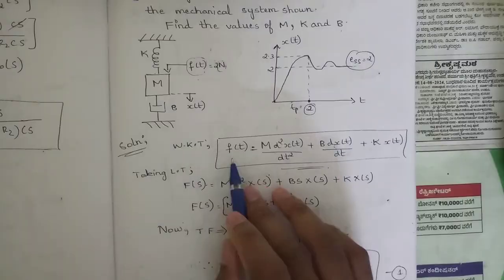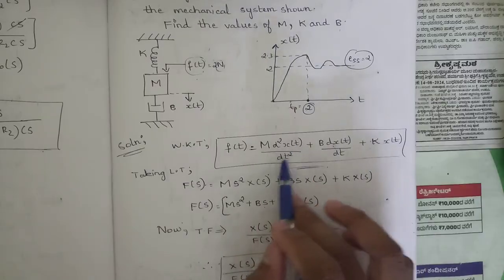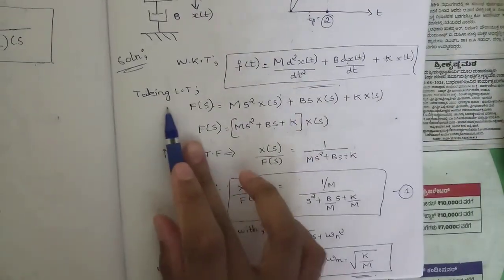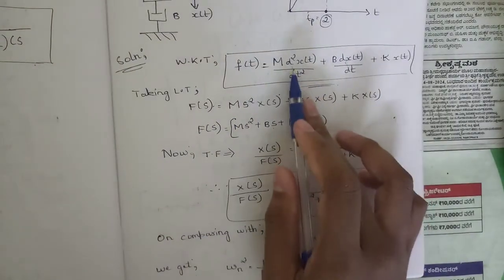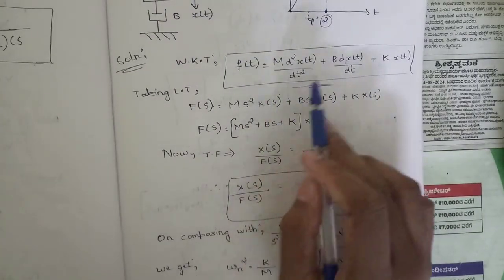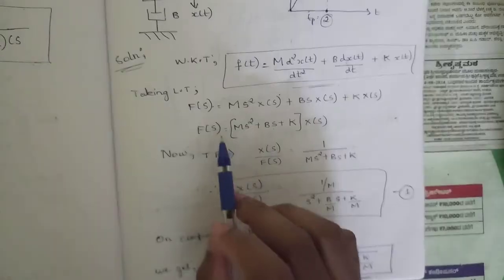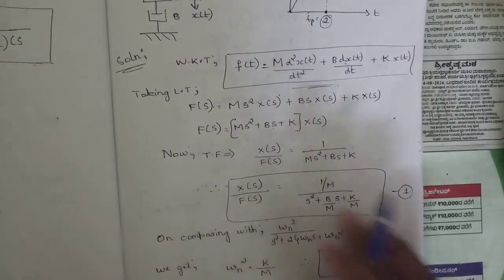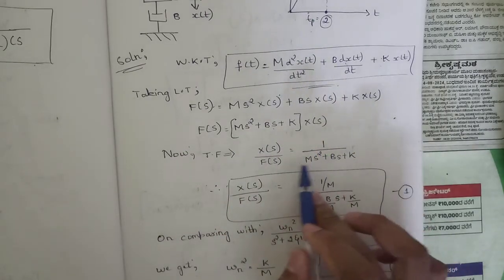First, write the general equilibrium equation for this mechanical system: m·d²x(t)/dt² + b·dx(t)/dt + k·x(t) = f(t). Taking the Laplace transform converts this to the s-domain: F(s) = (ms² + bs + k)·X(s). The transfer function X(s)/F(s) is therefore 1/(ms² + bs + k).